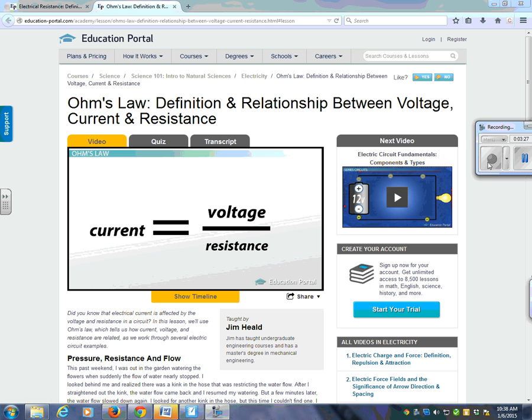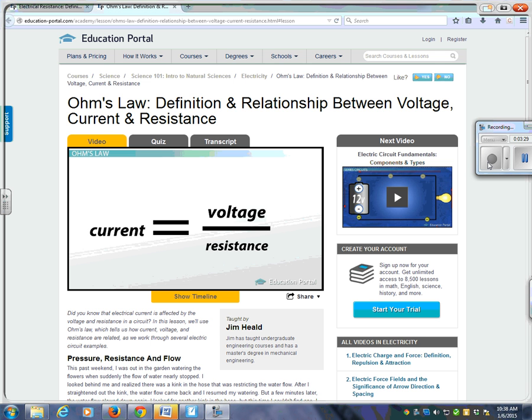What's this formula? Current is I. Voltage is V. And resistance is R. So the formula is I equals V over R. That, my friends, is called Ohm's law.